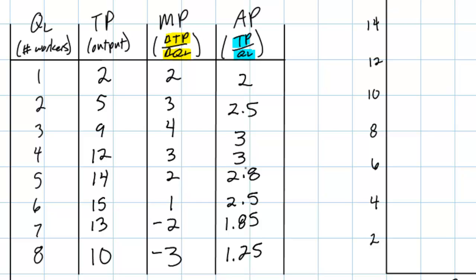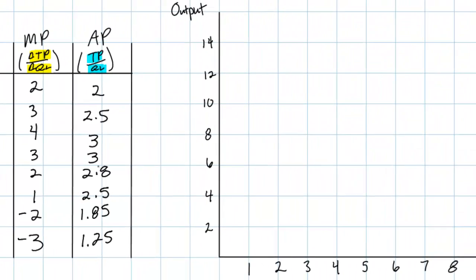Now our table is complete. On the left we have the number of workers, and in each successive column we've recorded the total product or output at the end of each one-minute round, the marginal product which is the change in total product resulting from the additional worker that was added, and finally the average product which is the output per worker. Next we're going to plot these variables on a graph.